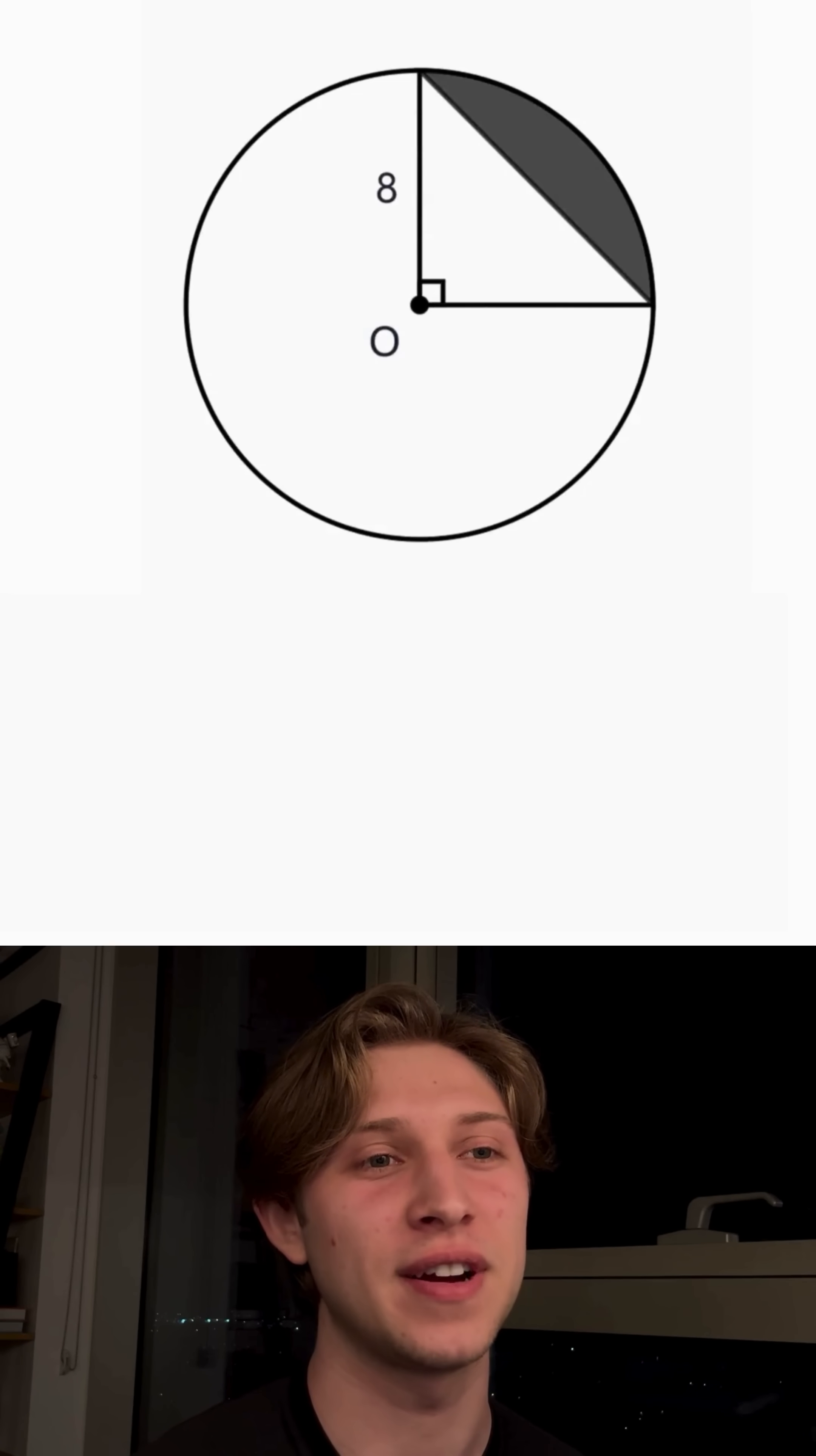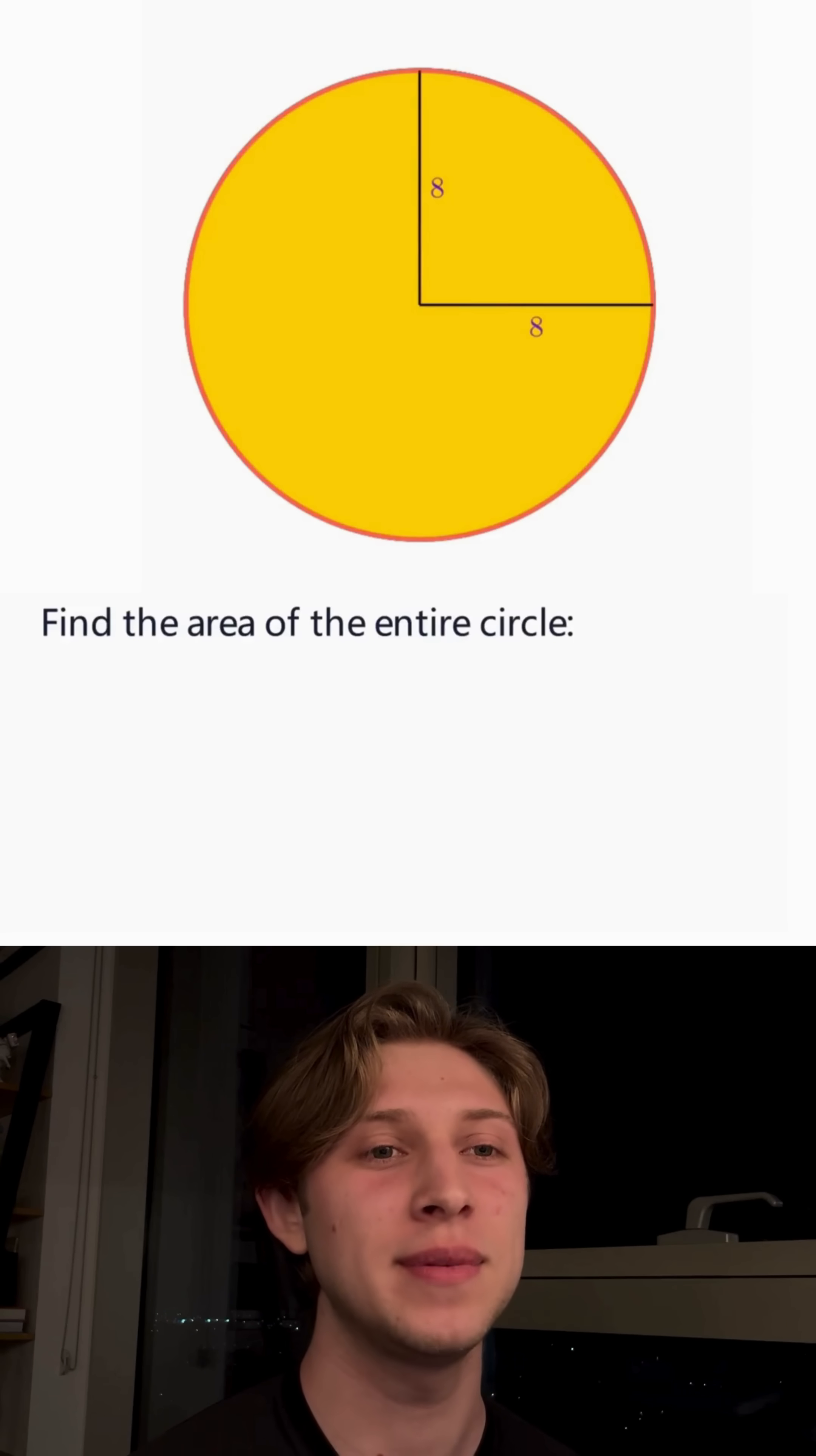Maybe we can start by finding the area of the circle. That's pi times the radius squared. And since the radius is 8, that means the total area of the circle is 64 pi.